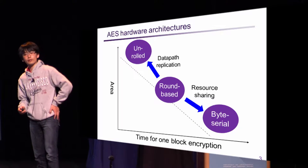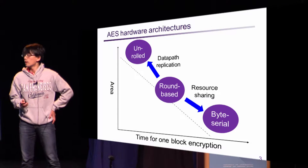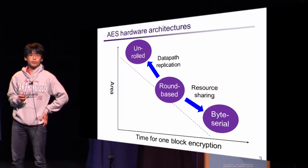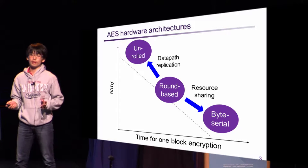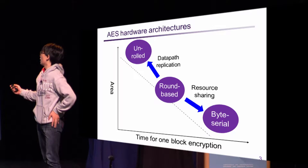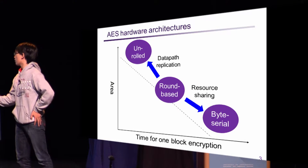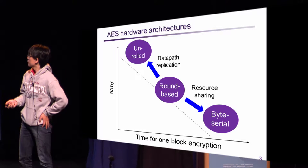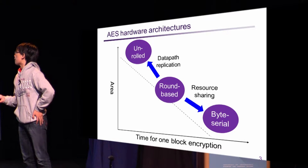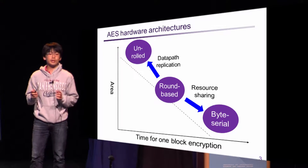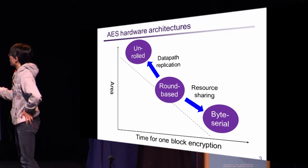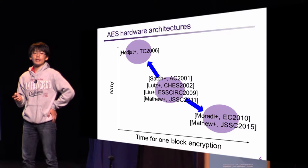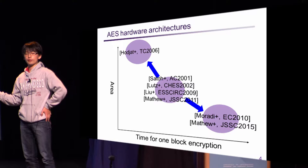So far, many AES hardware architectures have been developed. In designing AES hardware architecture, many designers would consider tradeoffs between throughput and circuit area. In this figure, the horizontal axis corresponds to throughput and the vertical axis is circuit area. Roughly speaking, there are three types of implementation: namely, round-based, byte serial, and unrolled architecture. Many conventional architectures are also classified as shown in this figure.